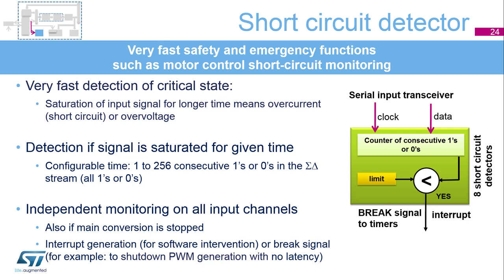Monitoring is performed independently from the main conversion process, which can proceed with another channel or be stopped completely. All input channels can be monitored in parallel with their own timeouts. When a saturation event is detected, an interrupt can be invoked or a brake signal generated. Just like with the analog watchdog, the software decides the following action, or the hardware brake signal can launch a safety function without any software interrupt latency. In the example of a motor, it can stop the timer if a short circuit is detected in the wiring.